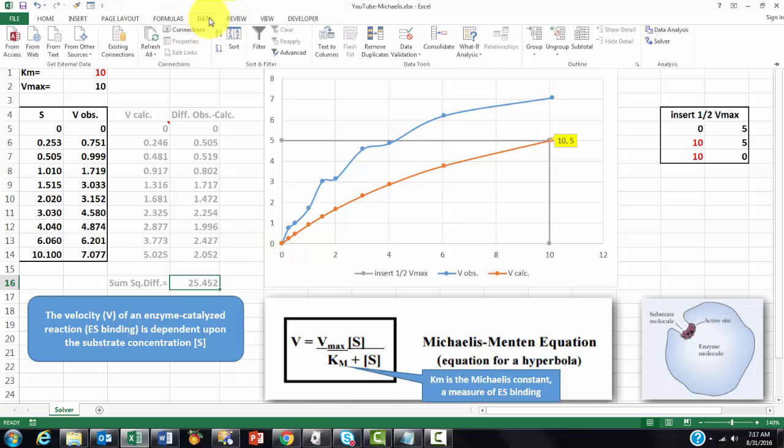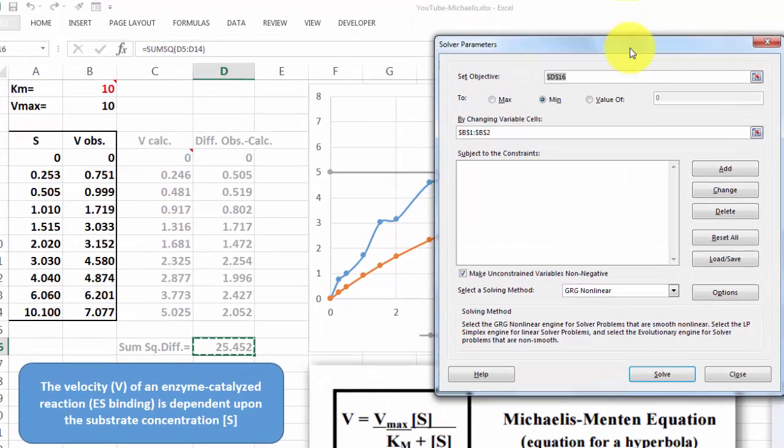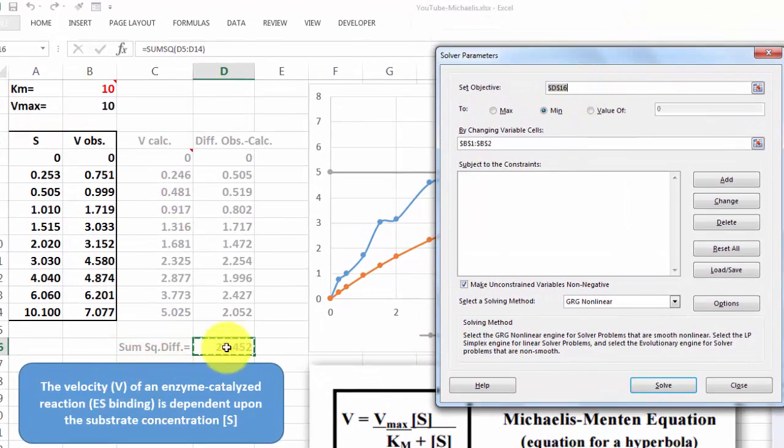you go to Data Solver. And in Solver, you can set your objective, which is in this case the sum of the square differences, D16, and you set it to a minimum. And you let Solver find out what to change in B1 to B2. Those are your guesses. So that we reach a minimum of D16.